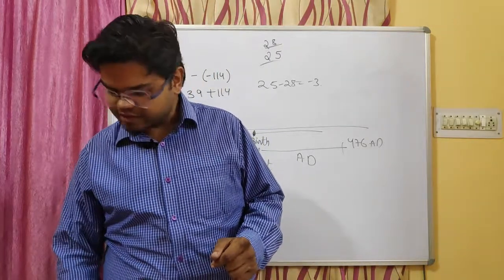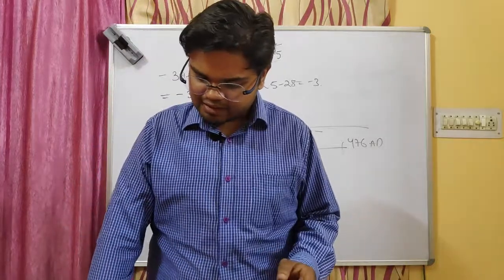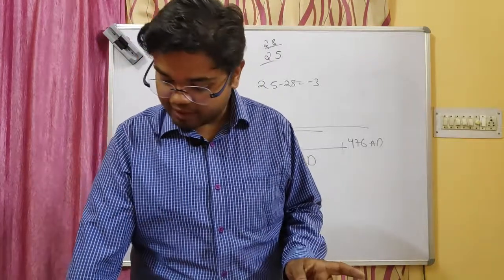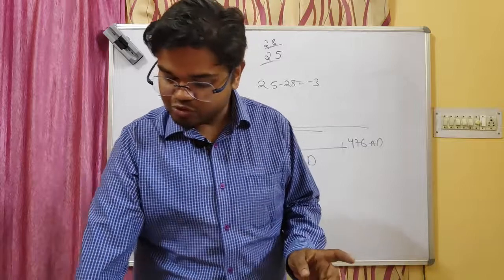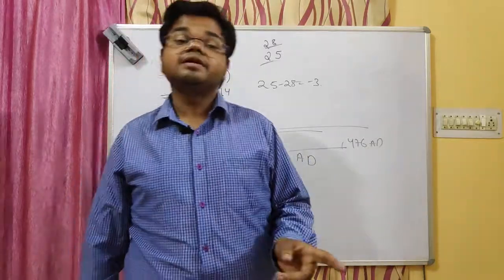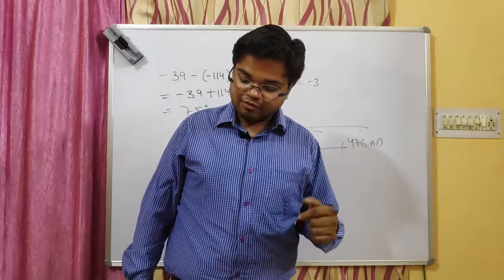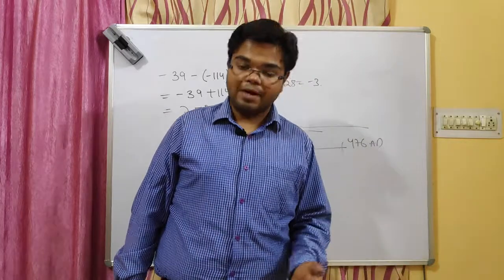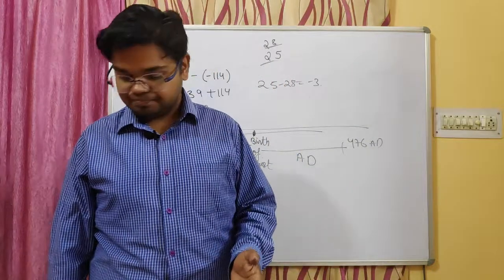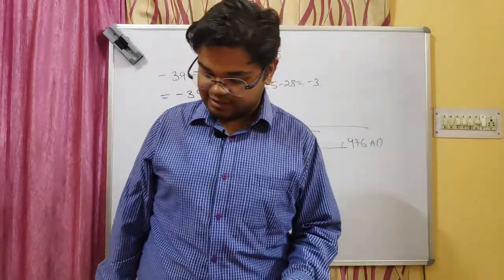So in this exercise, questions 1, 2, 6, 10, 11, 12, and 13 you will do in your textbooks. For question 3, you will not use the number line — use simple subtraction. The rest that I have discussed will be done in your fair notebooks, and what I have left will go in your practice notebooks. Thank you, children — we will meet in the next class.